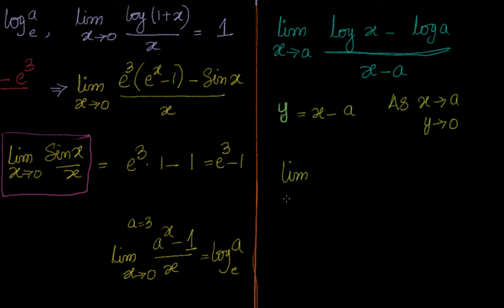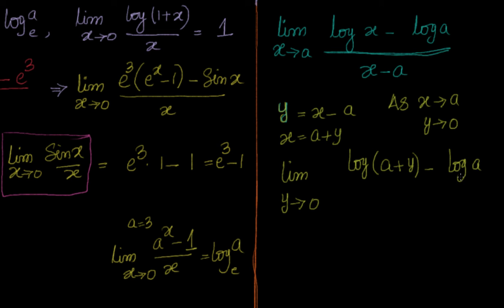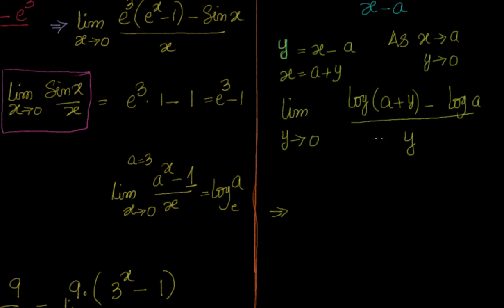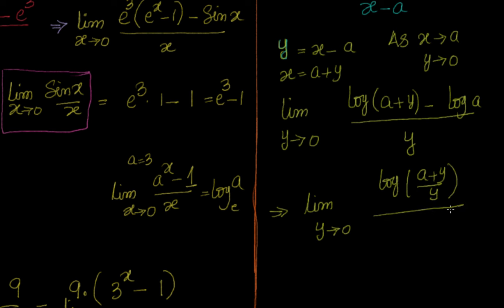I will substitute in terms of y. Limit y tends to 0 — log of x, where x equals a plus y — so it becomes log(a plus y) minus log(a), divided by y. We know the laws of logarithms: log a minus log b equals log(a/b). Applying that, I get log of (a plus y)/a, divided by y, which gives log(1 plus y/a) over y.